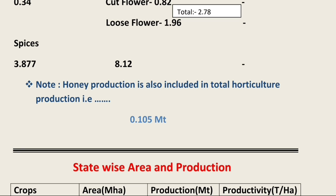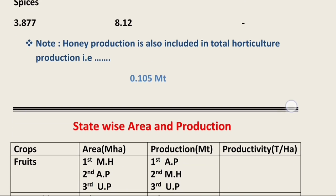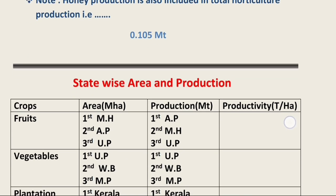An important point: honey production is also included in the total horticulture production figure published each year on the National Horticulture Board website. The total honey production is 0.105 million ton.